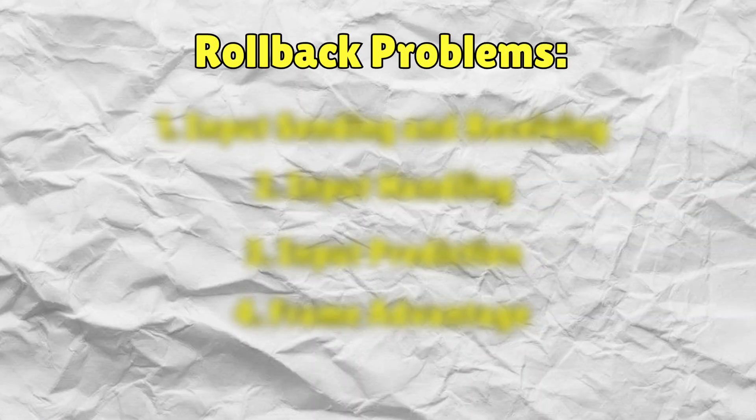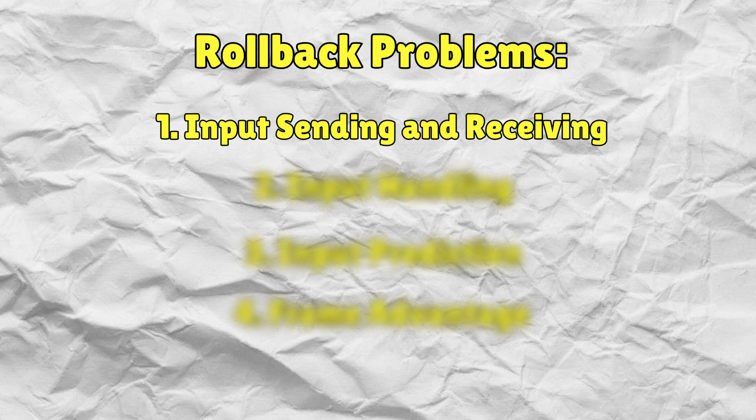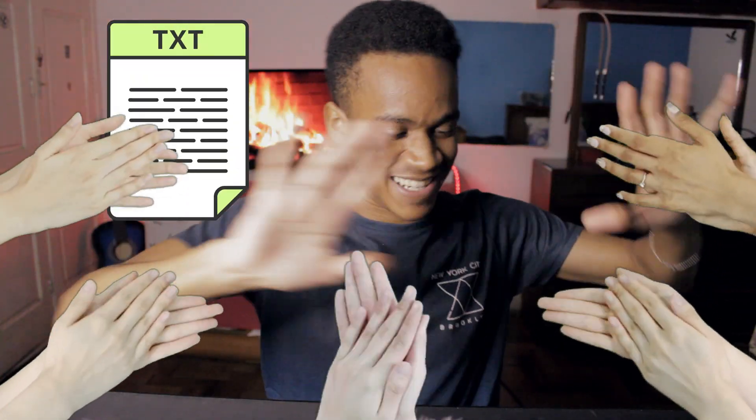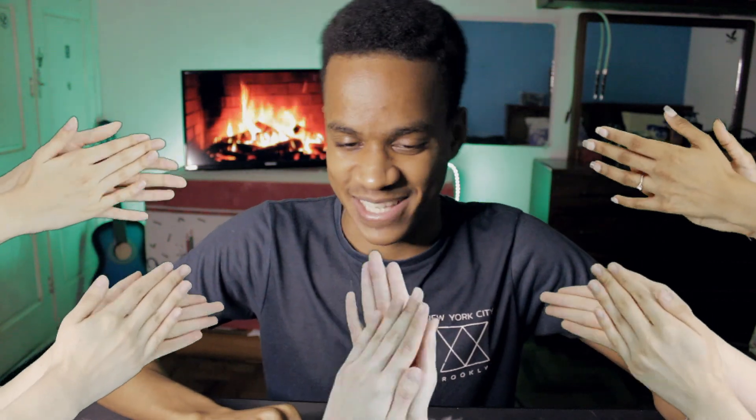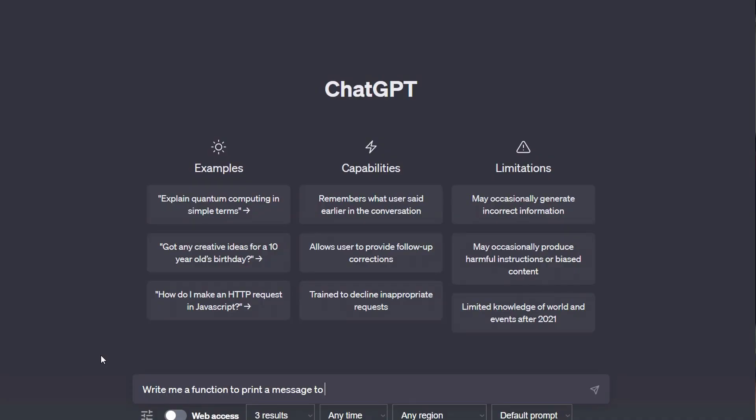So I got to my first problem, which was input sending and receiving. Rollback netcode is constantly sending and receiving inputs, and with my system I wasn't sure if the inputs were being sent and received properly, so I needed a way to check this for myself. I got the brilliant idea to write all of the inputs to a text file. But there was a problem — I never did this in Unity. So I asked ChatGPT to do it.